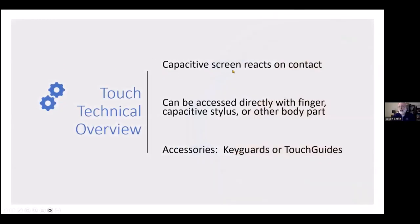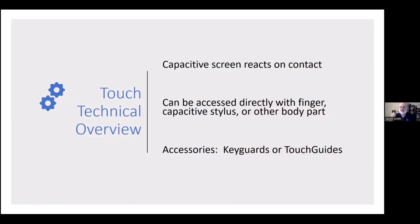Nowadays it's all capacitive screens that react to contact, so you need good electrical contact. Some gloves or certain styluses don't react well with certain screens. You can access the screen directly with a finger, a stylus, or other body parts. A lot of kids try to use it with their nose; others use it with their toes. I have users who use the base of their wrist. Whatever they can volitionally, repeatably, and consistently do — we're going to use that.